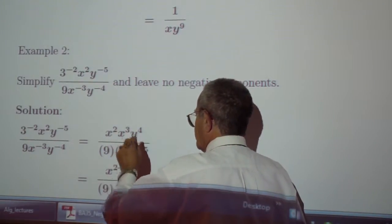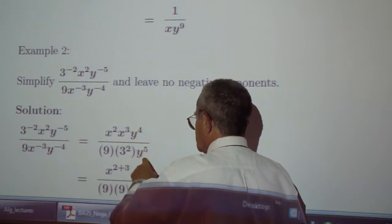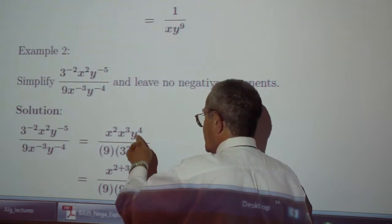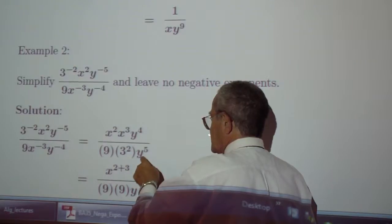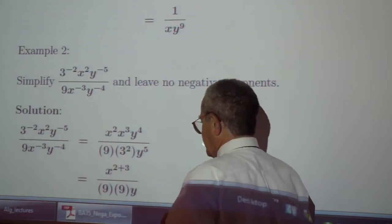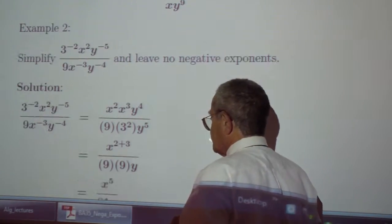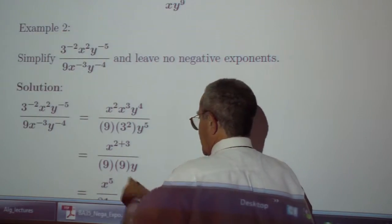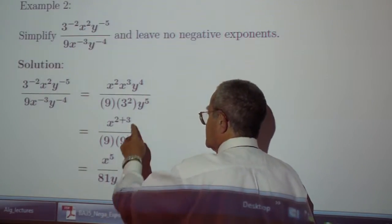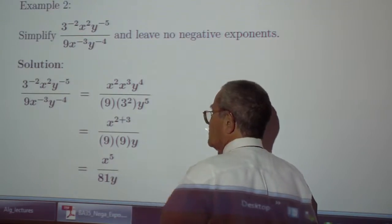So we have x to the 5, we have y to the 1 in the denominator. We have 4 y's here, 5 y's here, so we are left with the y in the denominator as a factor, and we have 9 times 9 which is 81, so we get x to the 5 over 81y.